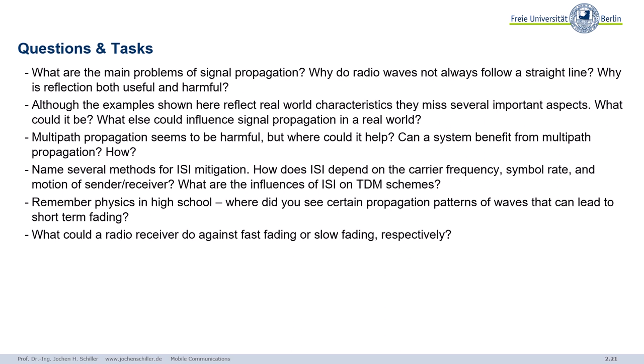So some questions just for the signal propagation. What are the main problems? Why can't those waves not always follow the straight line? You saw some examples. And think of reflection. This can be very useful. So I showed you some examples from real world. But still, we miss something. What do we miss? What else could influence the signal propagation? Because you saw there's a valley, there are walls, there are buildings. What is missing there? Think of multipath propagation. Can we benefit from it? How? Are there some ideas? What can we do?